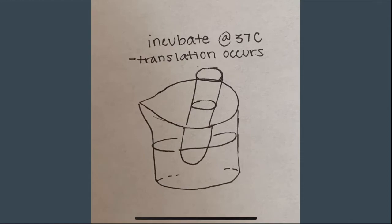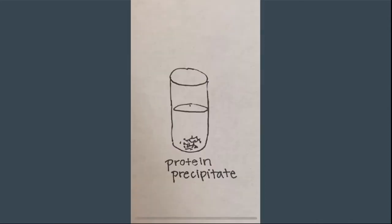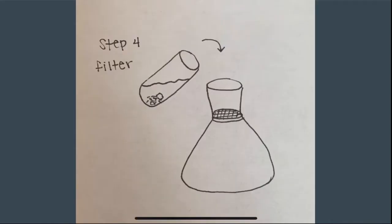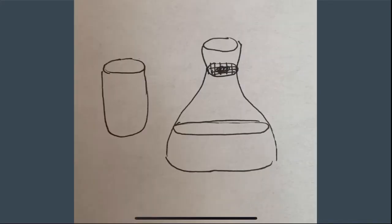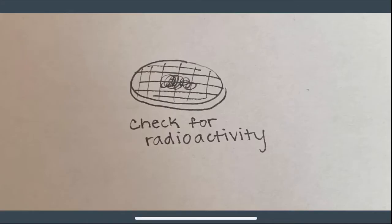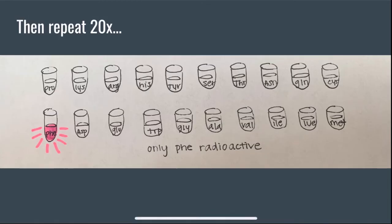They took this mixture and added each individual amino acid. In each trial, one amino acid was radioactive. They repeated this 20 times, one time for each amino acid to be radioactive. They did this because they wanted to see if the radioactive amino acid was incorporated into the string of amino acids.